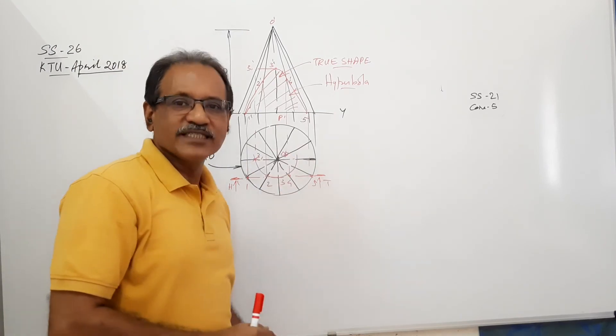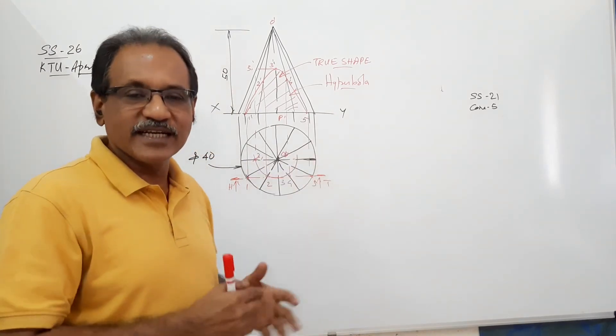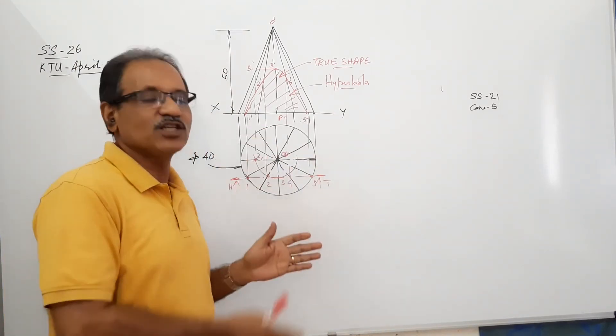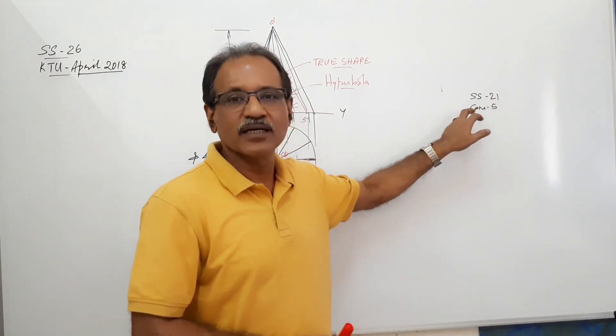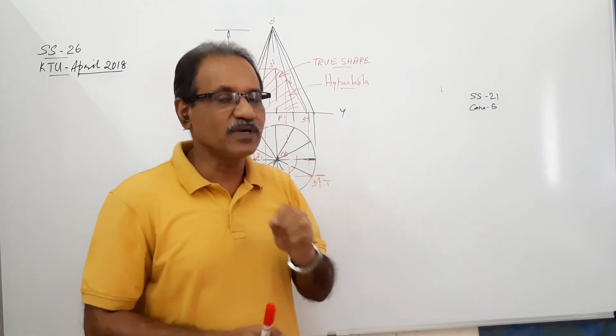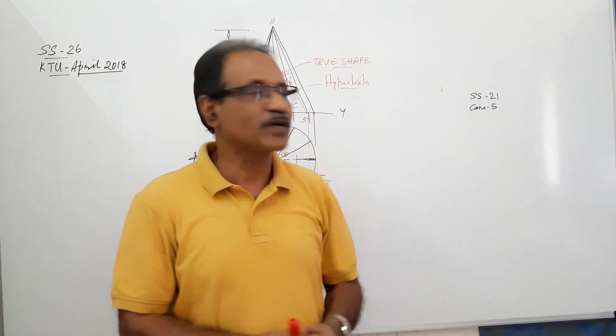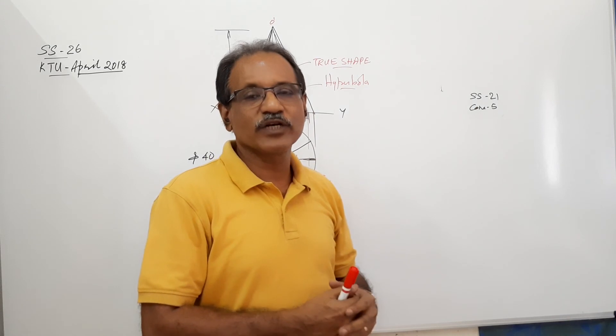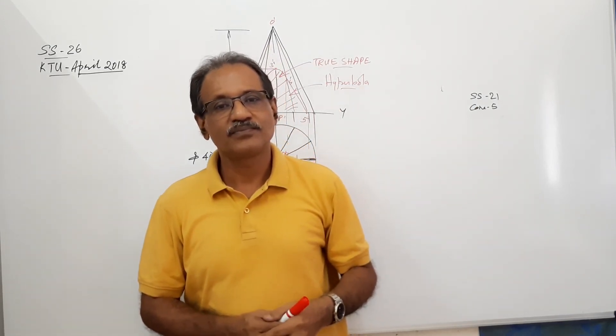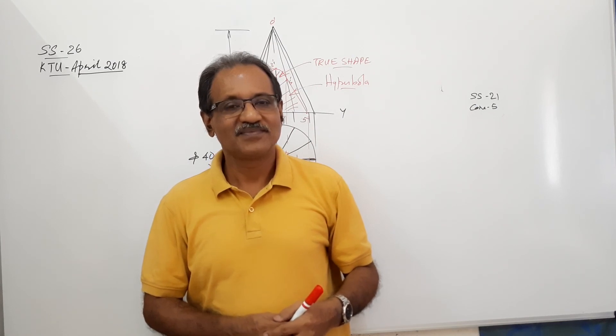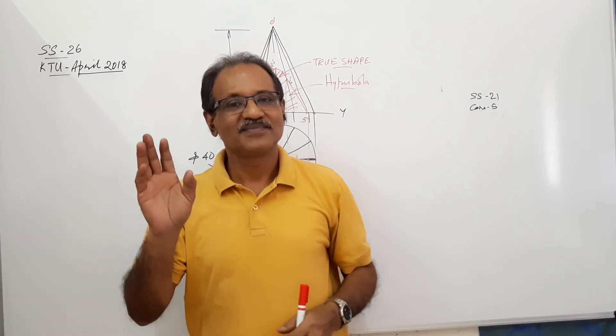There is no need of an additional true shape because the sectional elevation itself gives true shape because the cutting plane is parallel to VP. A very similar problem is worked out in section of solid 21 cone 5. Thank you.